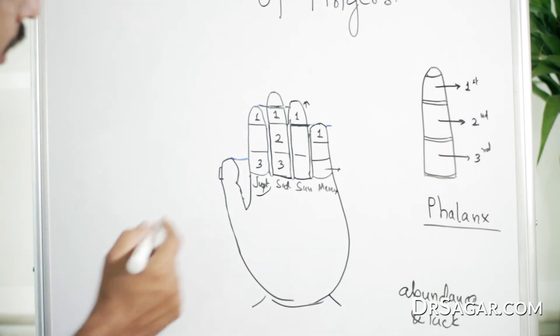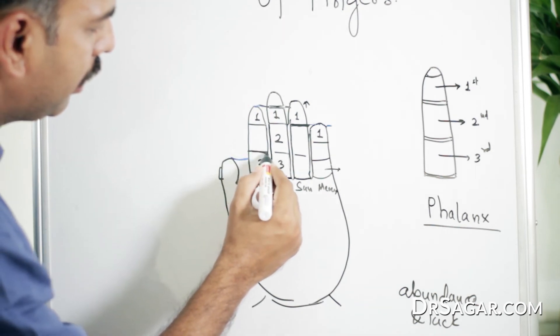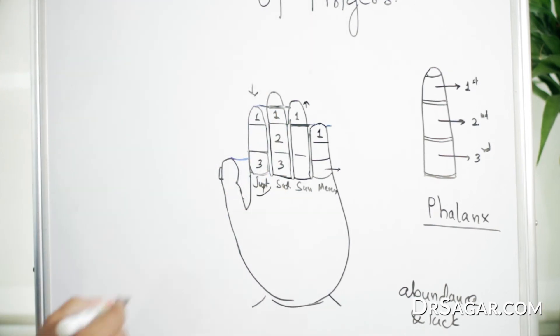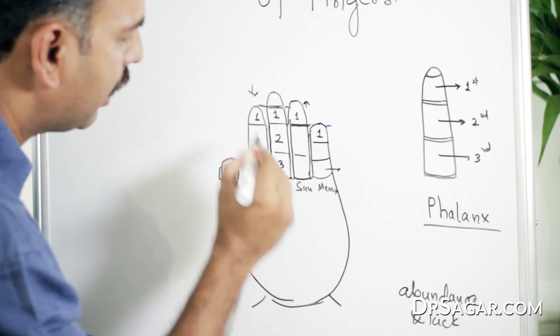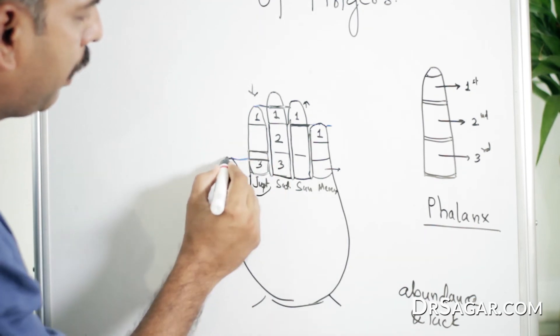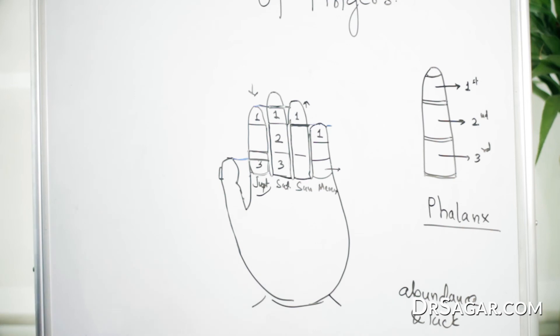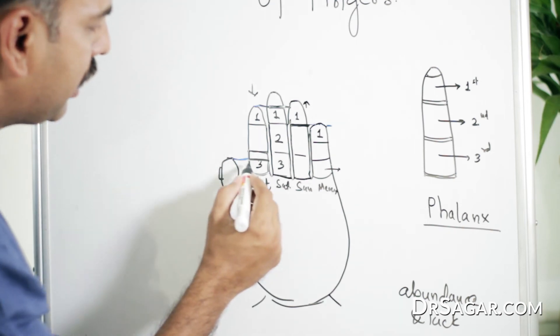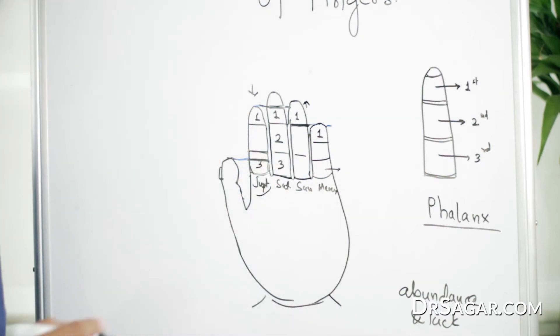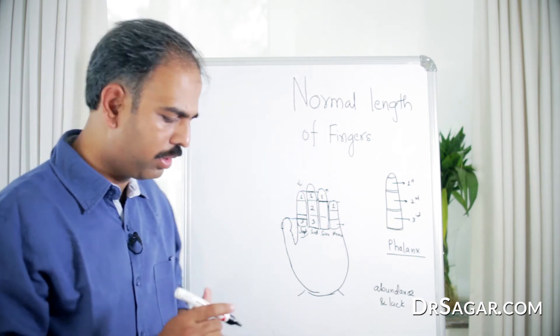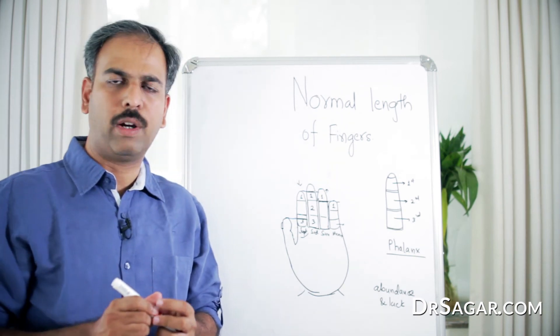About the thumb. Now, this is the third phalanx of the first finger. This is the middle part. So the tip of the thumb, when holding closely, should reach at least the middle of the lower phalanx of the first finger. So this is the normal length of each finger.